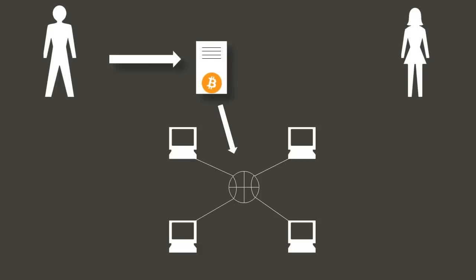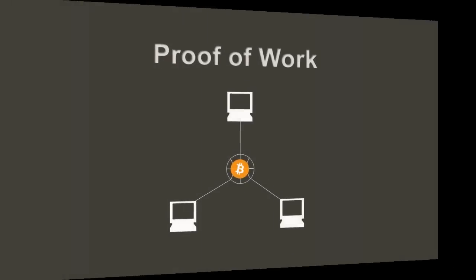Now that you understand how the blockchain works in relation to traditional banking, let's talk about how transactions are recorded. When Bob sends Sally Bitcoin, the transaction is broadcast to the entire system. This transaction is then grouped together with other transactions into a block. To incentivize the collection and recording of these transactions, the network rewards the one recording the block with Bitcoin. Everyone is competing for the right to record the transactions, but only one node on the network can make the official record at a time.